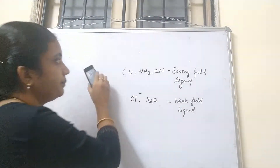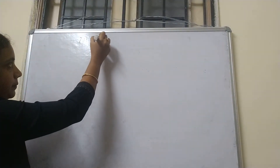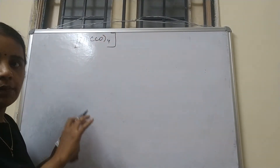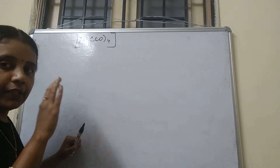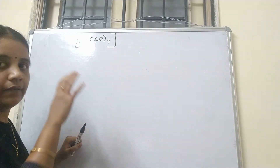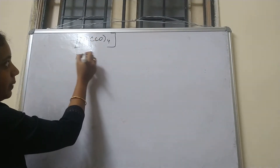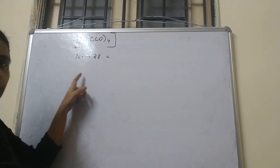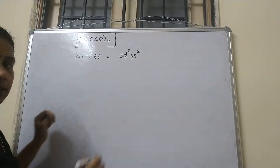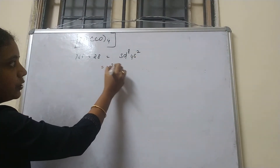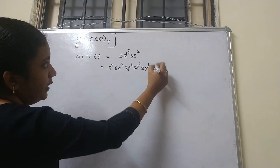Let's take a look at examples. First example is nickel tetracarbonyl, Ni(CO)₄, which is a coordination complex. We will determine its hybridization and magnetic properties using valence bond theory. The atomic number of nickel is 28, so its outer electronic configuration is 3d8, 4s2. The full electronic configuration is 1s2, 2s2, 2p6, 3s2, 3p6, 4s2, 3d8, giving atomic number 28.